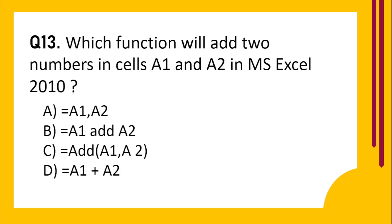Question number 13. Which function will add two numbers in cells A1 and A2 in MS Excel 2010? Option A: =A1 AND A2. Option B: =A1 ADD A2. Option C: =ADD(A1,A2). Option D: =A1+A2.